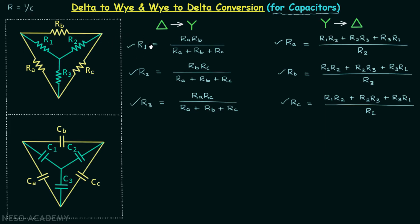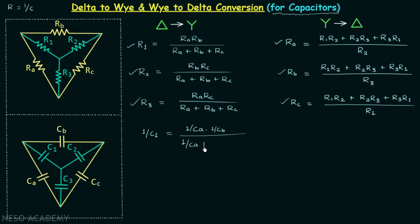For example, here we have R1, therefore in place of R1 we will have 1 over C1. So to calculate C1, we will have the equation: 1 over C1 equal to (1 over CA multiplied by 1 over CB) divided by (1 over CA plus 1 over CB plus 1 over CC).